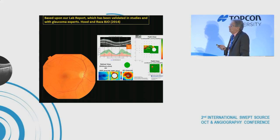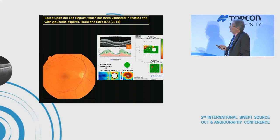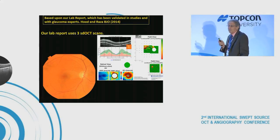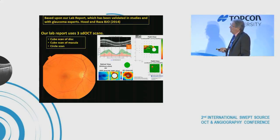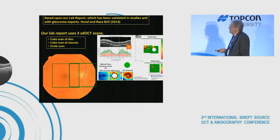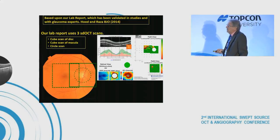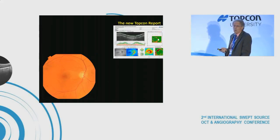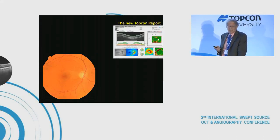The report I'll describe is based on a lab report we developed and published in BJO. That report required three scans: a scan of the disc for the retinal nerve fiber layer, a scan of the macula, and a circle scan. The criticism was that it required too many scans.